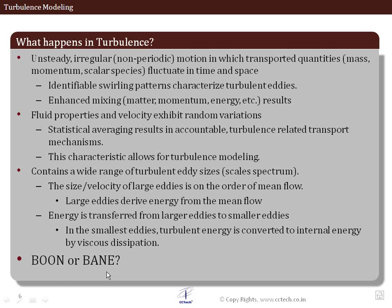Whether turbulence is a boon or a bane — if turbulence is desired, then we have to pay the cost of reduced flow pressure. Let's say flow is entering into a piping structure and we want enhanced turbulence to cause efficient heat transfer. The cost we have to pay is that the duty on the pump or compressor attached at the beginning of the piping structure is increased, because it has to provide higher pressure to cause the same amount of mass to flow within the domain. So the cost is the pressure drop which is increased because of turbulence.